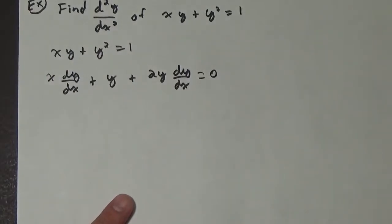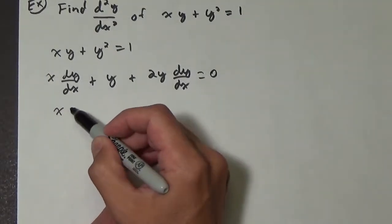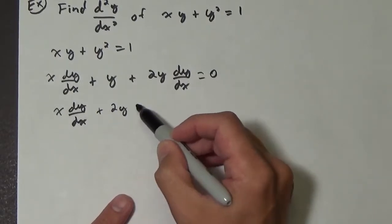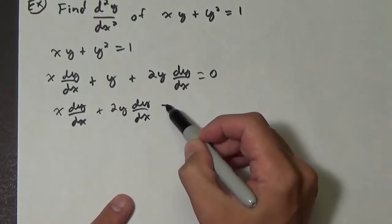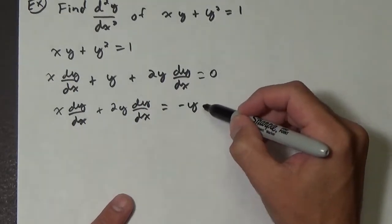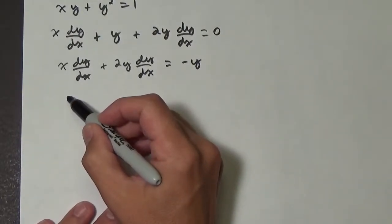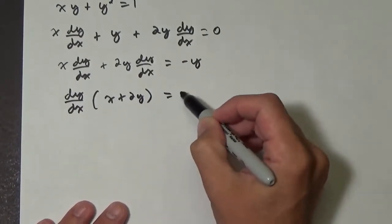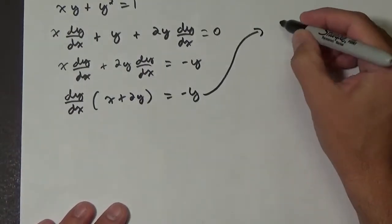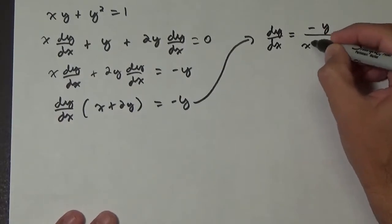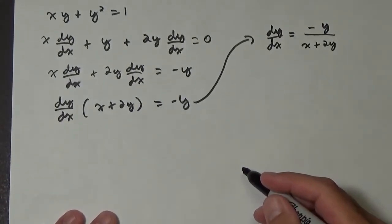So let's figure out the equation for the first derivative. We end up having x dy/dx plus 2y dy/dx equals negative y. Then we have dy/dx times (x plus 2y) equals negative y. So dy/dx equals negative y over (x plus 2y). There is our first derivative.